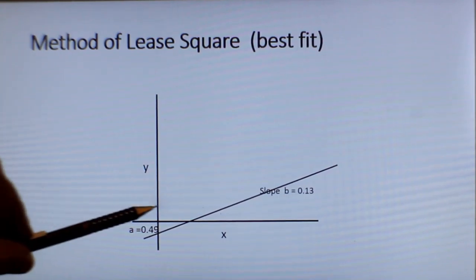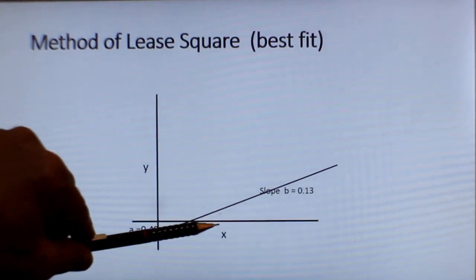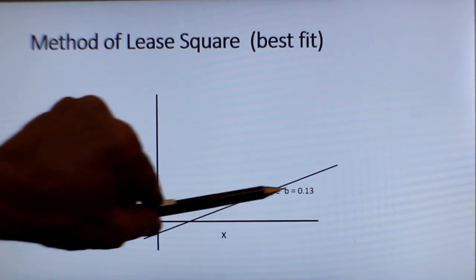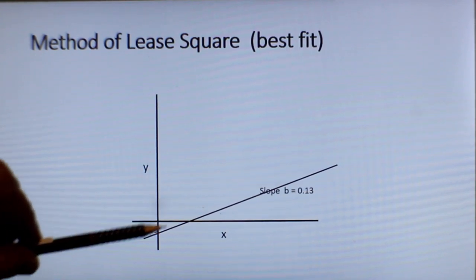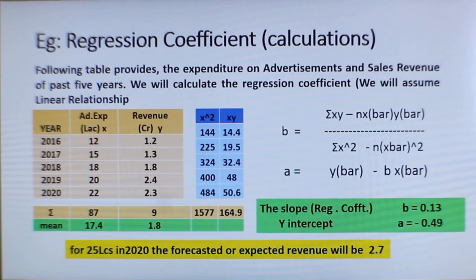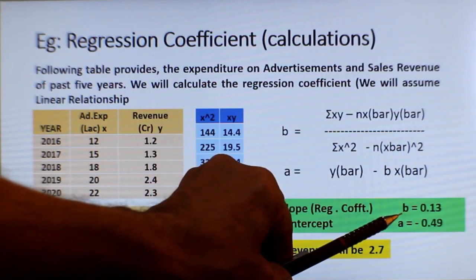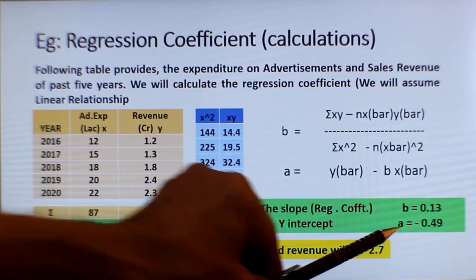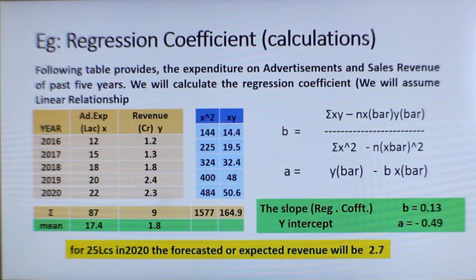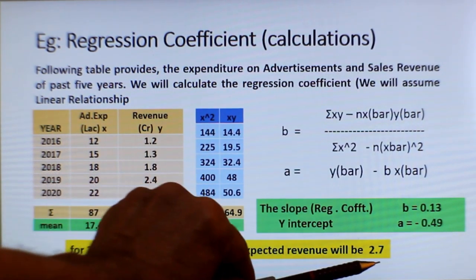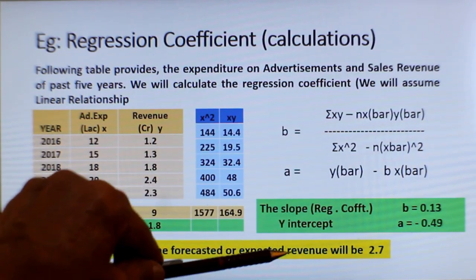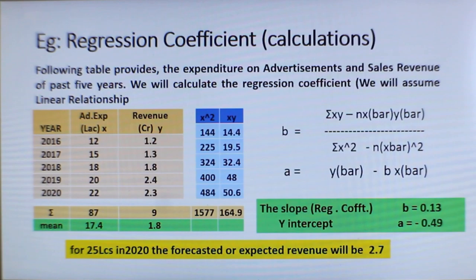If you actually plot those data points and the vertical distances are measured and square them up, you will find for this slope and for this y-intercept, you will get the minimum value. Having arrived at the regression coefficient b and also the y-intercept, you will be in a position to predict, given certain value of x, what will be the value of y. We have shown here an example. If you spend 25 lakhs in the year 2020, you can expect a revenue of 2.7 crores. The regression coefficient will help you to calculate or predict for the future.